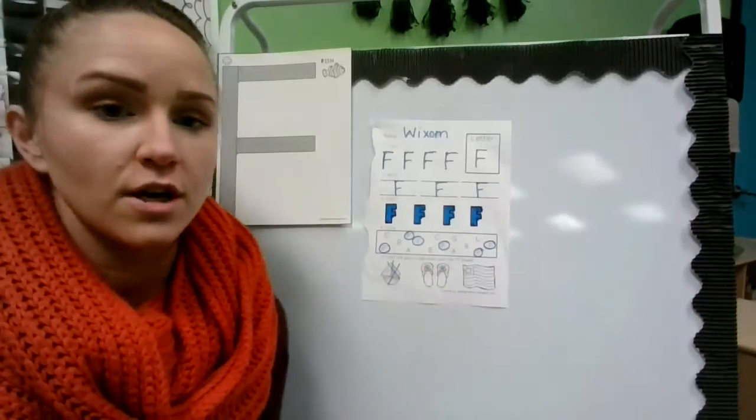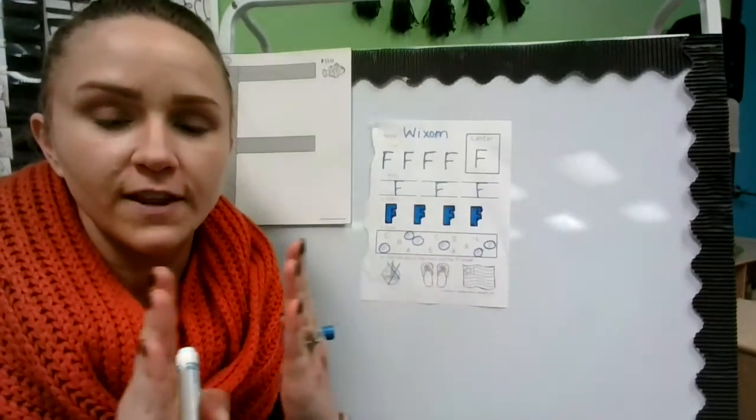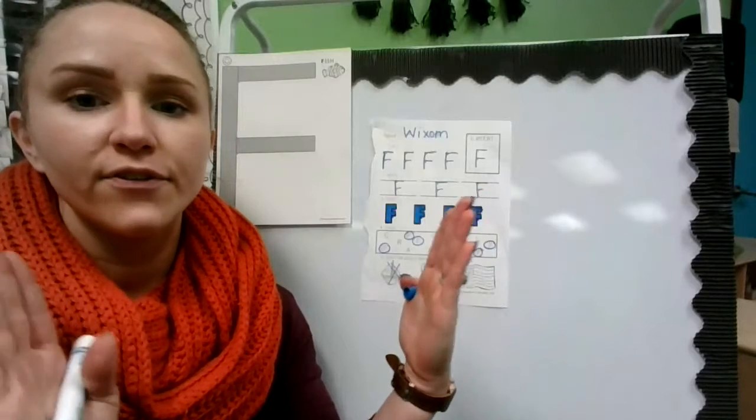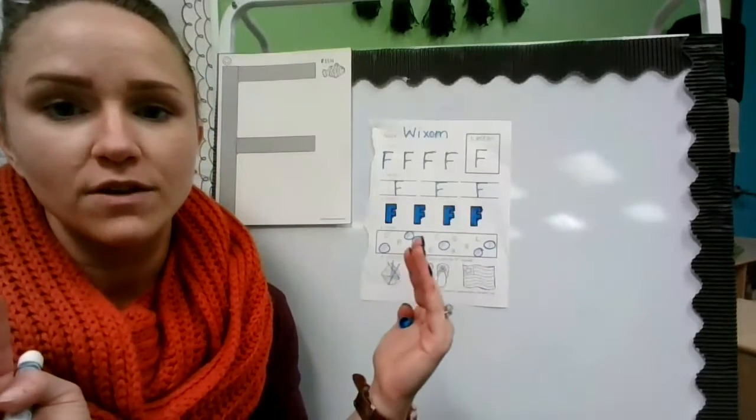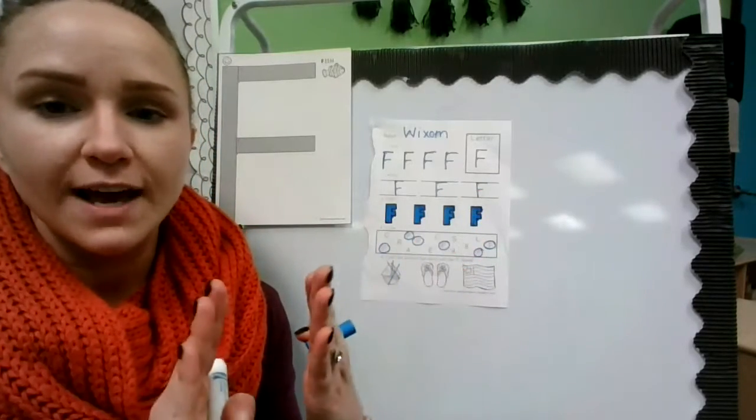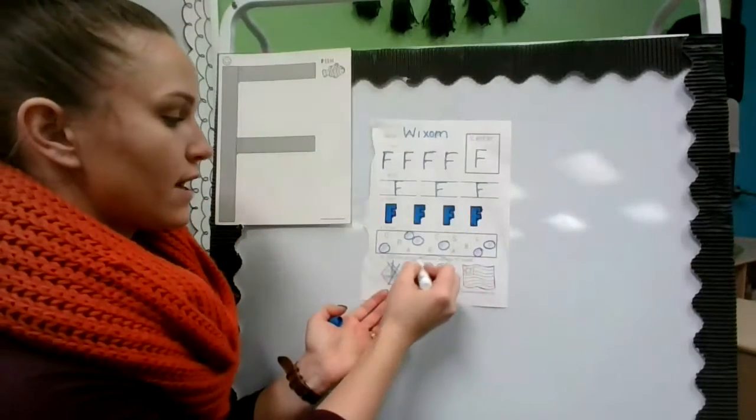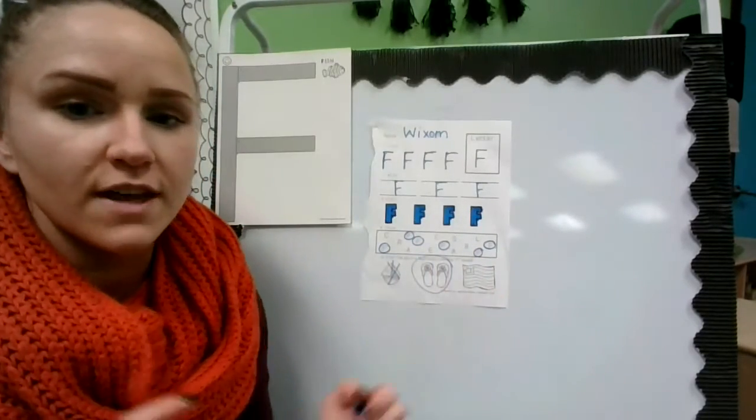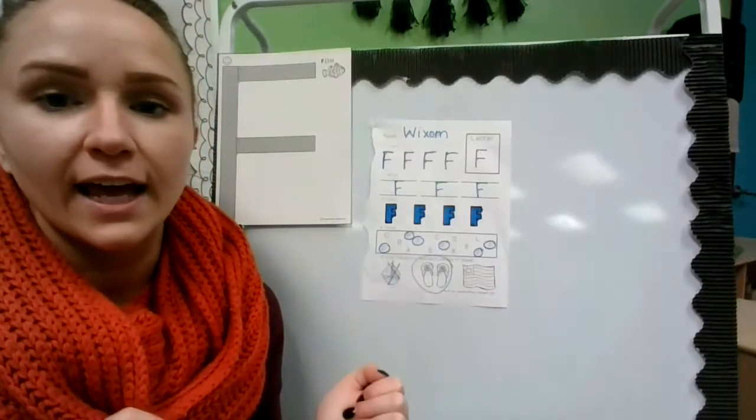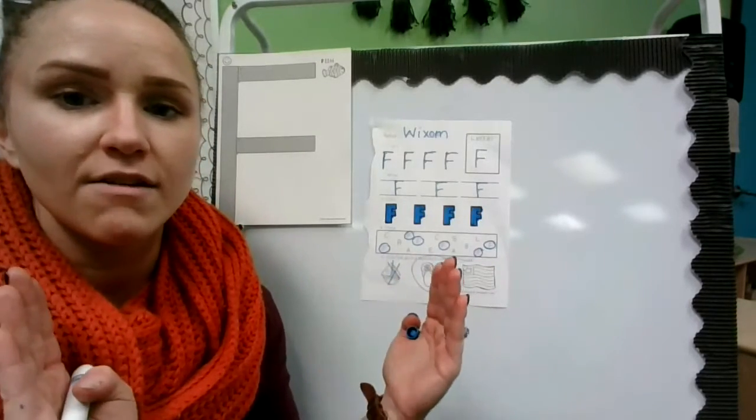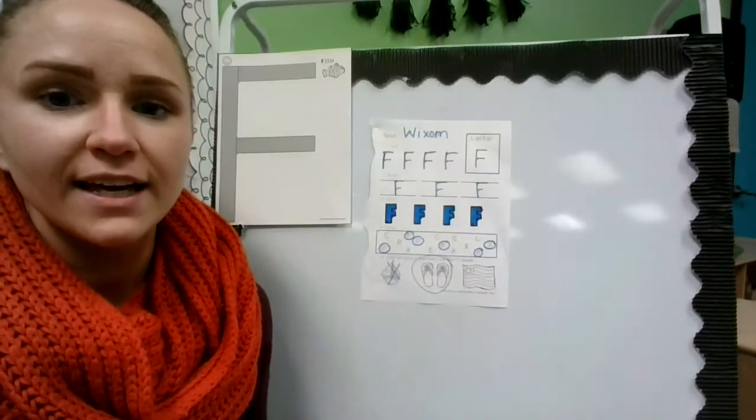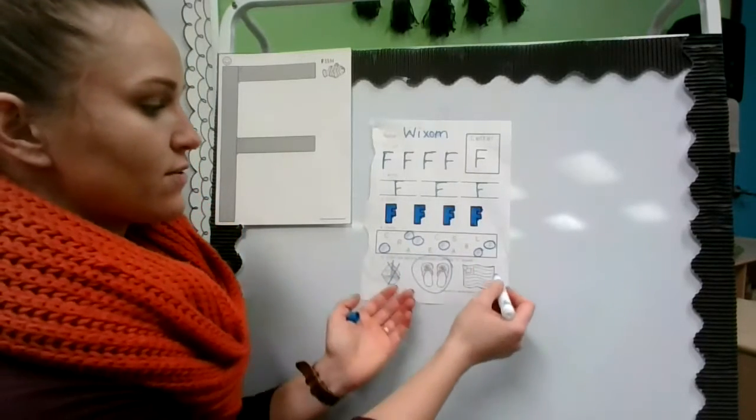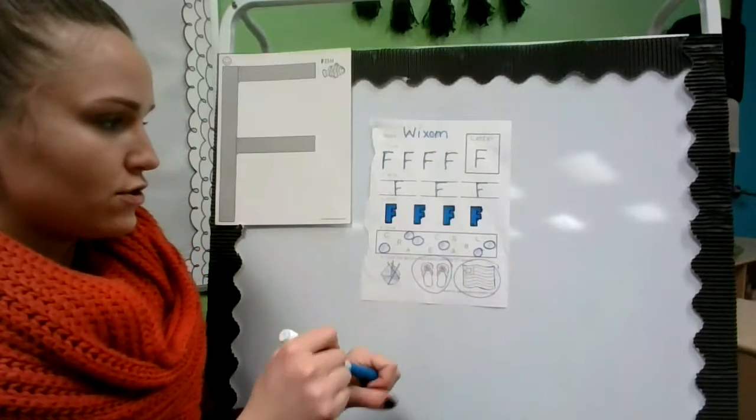The next picture is a picture of flip-flops. Do you hear F at the beginning of the word flip-flops? Yes, you do. So you can color it or circle it. You choose. This last picture is a picture of the flag. Do you hear F at the beginning of flag? Yes, you do. So you can color it or circle it. You choose.